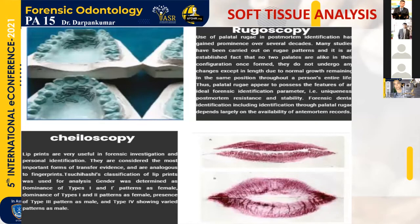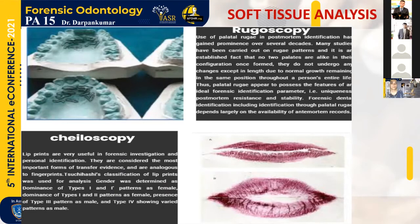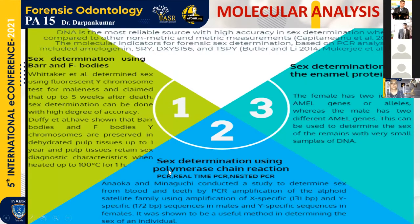In soft tissue analysis, we use rugoscopy and cheiloscopy. In rugoscopy, since palatal rugae are unique to each person, they can be used as a gender determination tool. Females have a higher number of curved and backward-directed rugae, while males have more perpendicular rugae. In cheiloscopy, lip prints can be used for sex determination as each lip print is unique. Using Suzuki's classification, there are five types of lip prints — types one and two are associated with females, while types three, four, and five are associated with males.